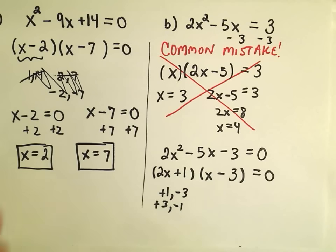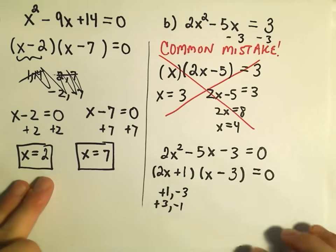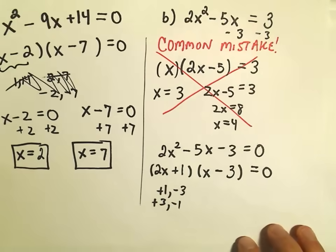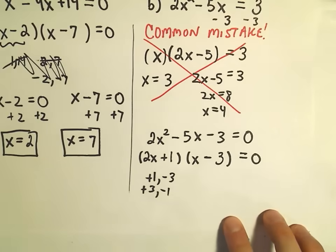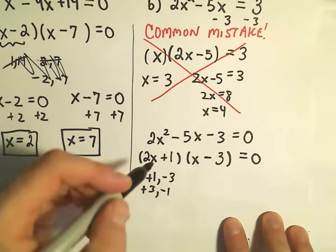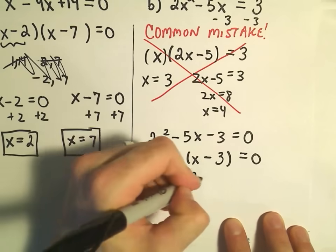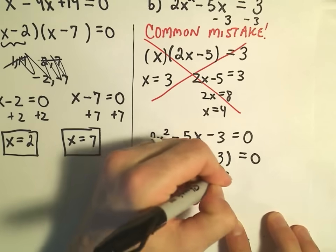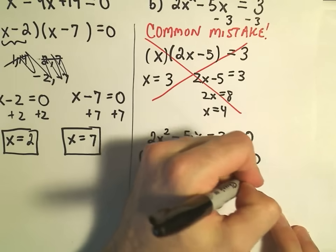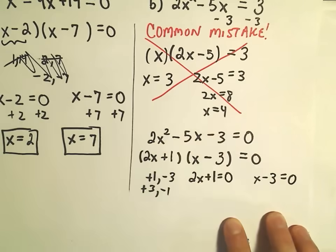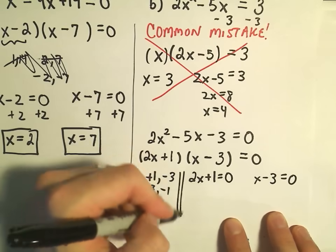Try factoring by grouping if you don't like this method. Certainly, there's other ways to solve these equations as well, but we're talking about factoring here. Same idea. I take each little set of parentheses, set it equal to 0, and then I just solve those resulting linear equations in these cases.